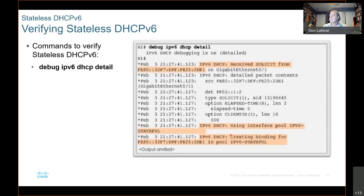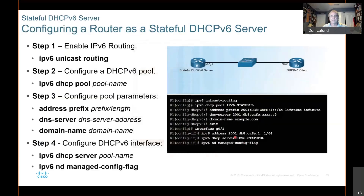To troubleshoot, if there's a problem, you might have to use the debug command — debug IPv6 dhcp detail. You'll get output like 'IPv6 using interface pool, IPv6 stateful.' If we're not expecting it to be stateful, we've got a problem. And if it created a binding — remember, having a binding means it's stateful, because we don't have a record of addressing in stateless.